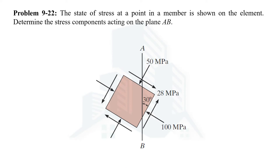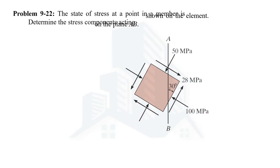Hello everyone, in this video we are going to solve problem number 22 from the chapter of stress transformation, which is chapter 9 in the book of Mechanics of Materials by R.C. Hibbeler. In this problem the state of stress is given and we are being asked to calculate the stress components acting on the plane AB, and we are going to solve this example with the help of Mohr's circle.